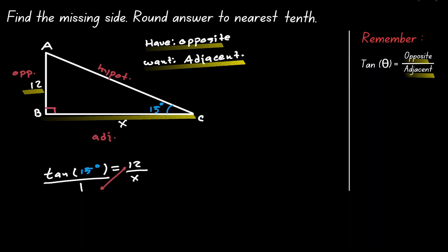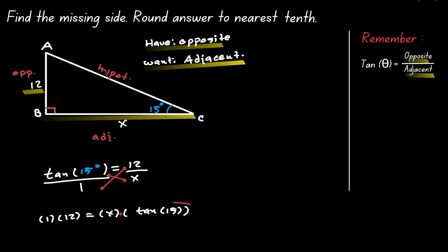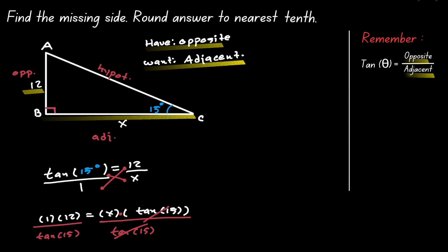Let's multiply 1 times 12, and multiply the tangent of 15 times x. This expression, tangent of 15, is a number, so we treat it as such. Under multiplication, to isolate x, we divide both sides by tangent of 15. Now we have isolated x, and x is equal to 1 times 12 — which is 12 — divided by tangent of 15.